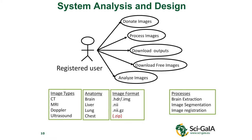Different anatomies are targeted: brain, liver, lung, and chest. Sample imaging formats include HDR/IMG pairs, NIfTI, and NIfTI GZ. At the current time, we use zip — so although we allow HDR, IMG, and NIfTI, you have to zip your images before submitting to MIPA.